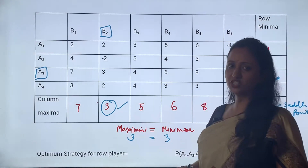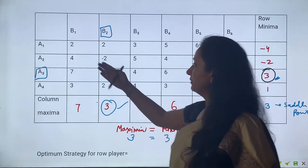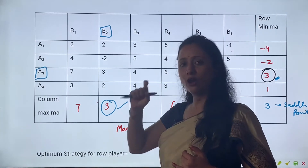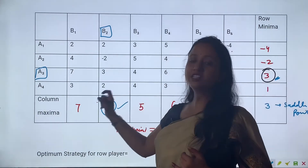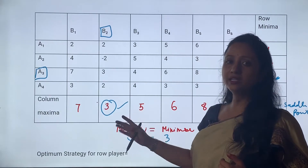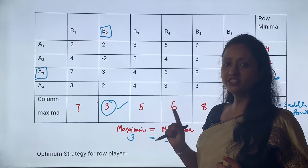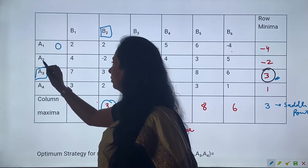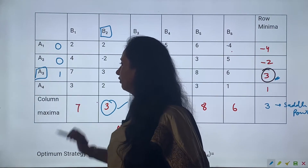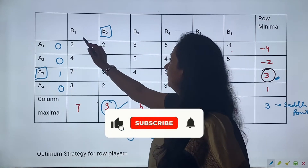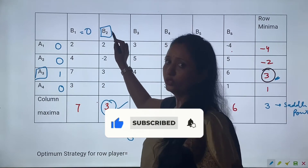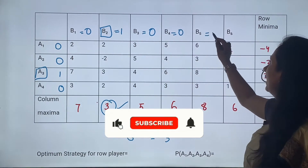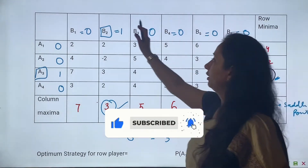दोनों के लिए optimum strategy होगी। Now the probability: Saddle point आ गया है, that means this is the question of pure strategy। Pure strategy में probability क्या होगी - जो एक ही strategy use हो रही है उसकी 1 होगी और सब की 0। तो A1 की 0, A2 की 0, A3 की probability 1, और A4 की 0. इधर भी B1 की 0, B2 वो use कर रहा है that is 1, B3 is 0, B4 is 0, B5 is 0, B6 is 0.